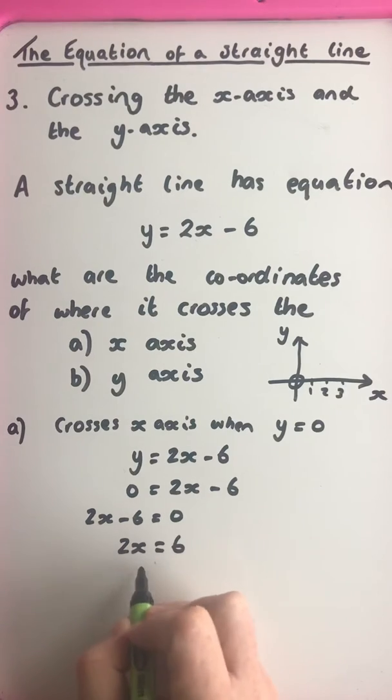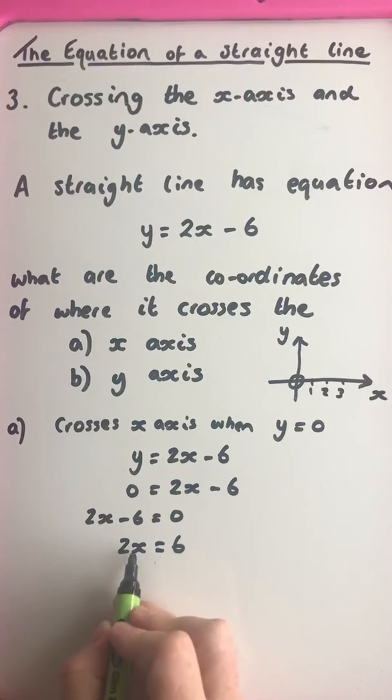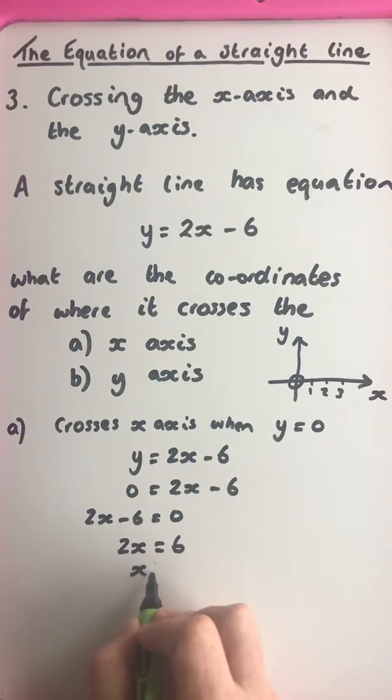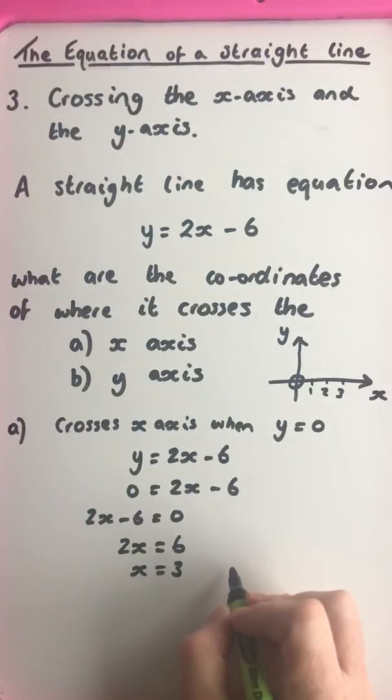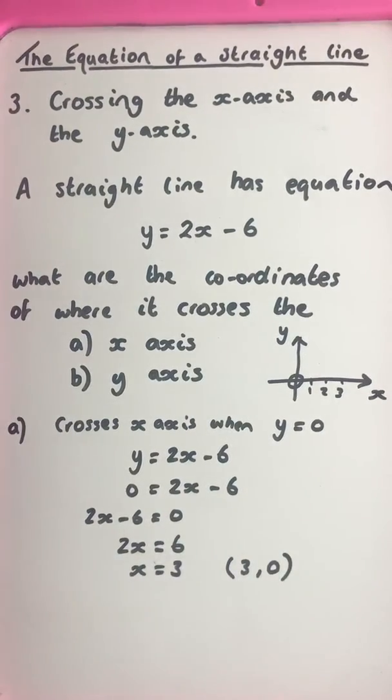And invert the multiplying by 2 to the division of 2. 6 divided by 2 is equal to 3. 2 threes are 6. The left hand side is equal to the right hand side, so 6 is equal to 6. So the question said the coordinates, so let's write down the coordinates: 3 and 0.